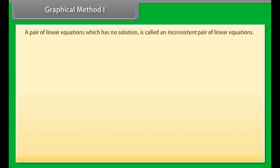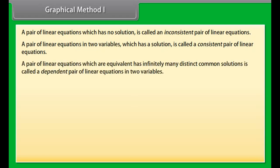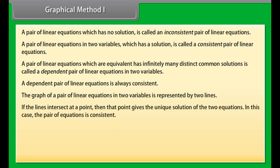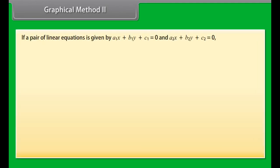Graphical method. A pair of linear equations which has no solution is called an inconsistent pair. A pair which has a solution is called a consistent pair. A pair which is equivalent and has infinitely many distinct common solutions is called a dependent pair of linear equations in two variables. A dependent pair is always consistent. The graph of a pair of linear equations is represented by two lines. If the lines intersect at a point, that point gives the unique solution — the pair is consistent. If the lines coincide, there are infinitely many solutions — the pair is dependent and consistent. If the lines are parallel, the pair has no solution and is inconsistent.